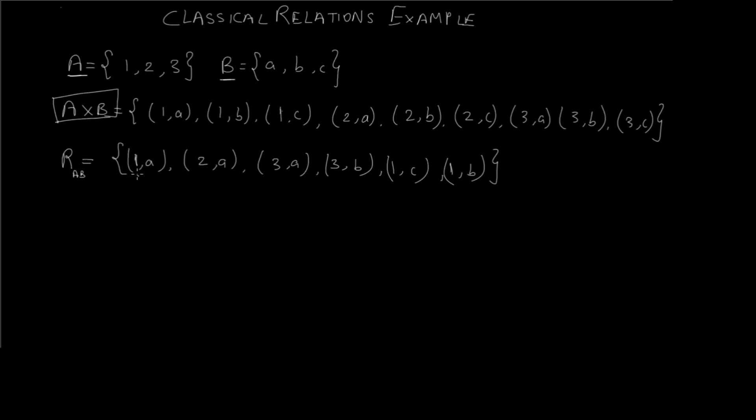Consider that we have been given a relation as follows. You can see that all these pairs in the relation also appear in the Cartesian product of the two sets, so this relation is a valid relation. You can also see that the first element of the pair is from set A.